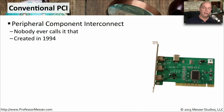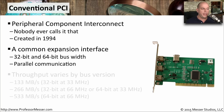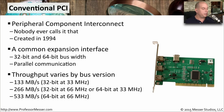Let's look at more details of these legacy conventional PCI connections — they stand for Peripheral Component Interconnect. You'll almost always hear it called simply a PCI connection or PCI slot. It's a very common interface that's been around since 1994. It has a 32-bit and a 64-bit bus, which determines how much data we can transfer over that expansion bus, and it communicates in parallel mode. The throughput varies depending on the bus: a conventional PCI connection can go anywhere from 133 megabytes per second up to 533 megabytes per second running a 64-bit bus at 66 megahertz.